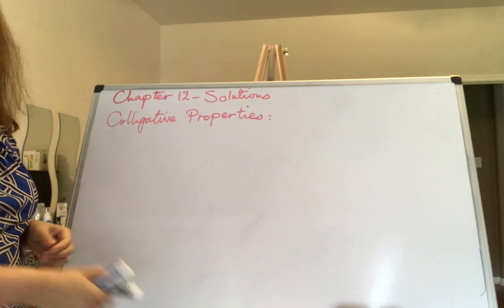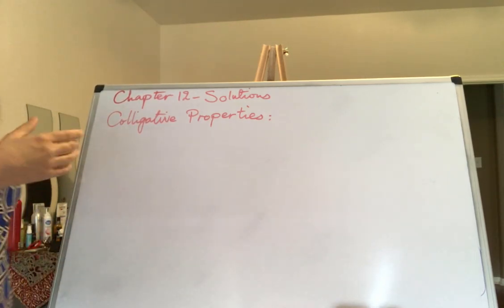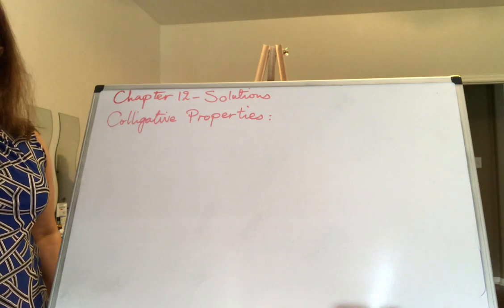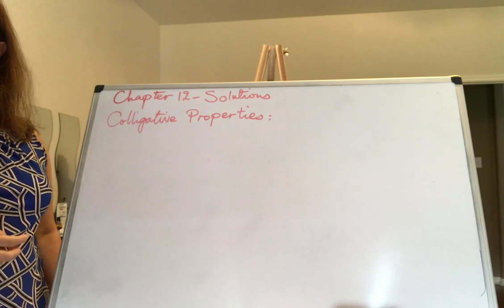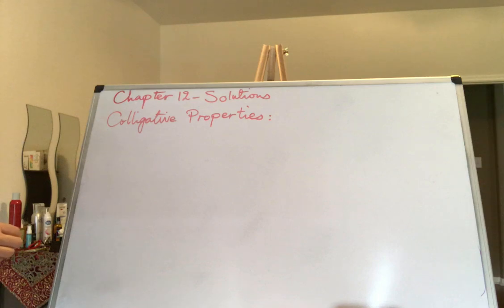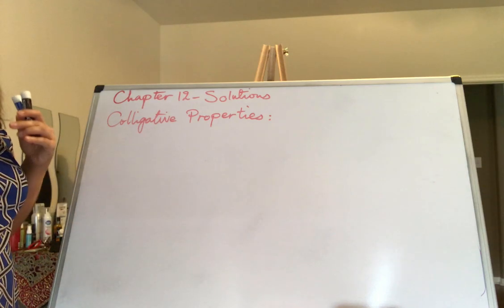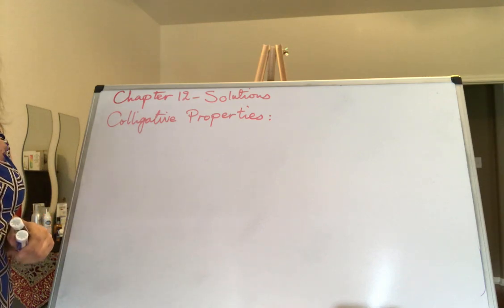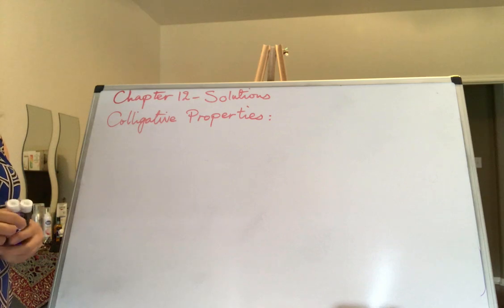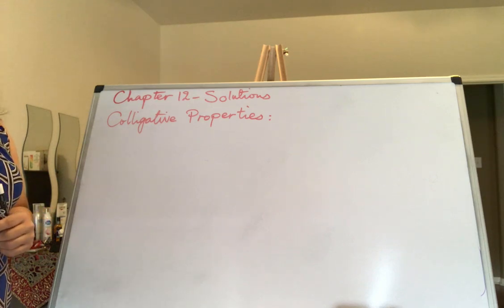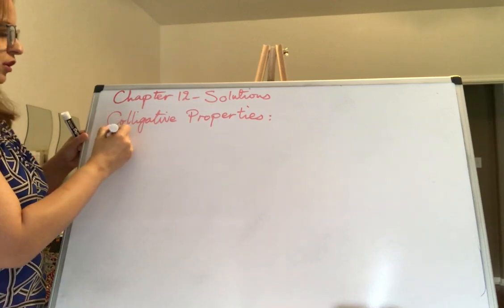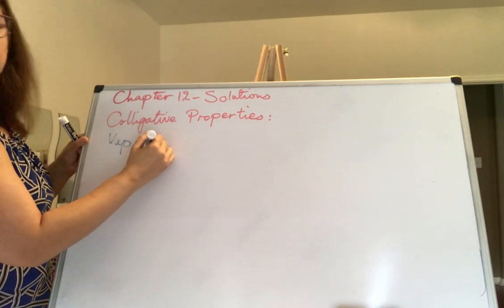The last part of this chapter talks about colligative properties. These are properties of solutions that depend on the concentration of the solute molecules — whatever you dissolve in a solvent has an effect on some properties of the liquid. One of them is vapor pressure, another is boiling point, then freezing point, and osmotic pressure. Let's talk about vapor pressure lowering first, and then we'll take care of the rest.